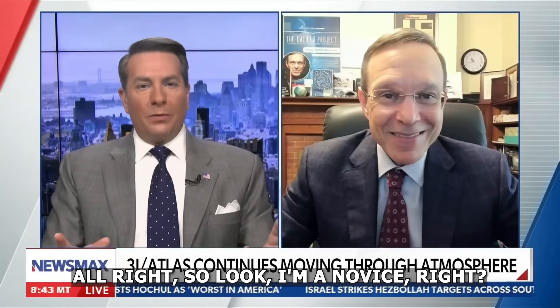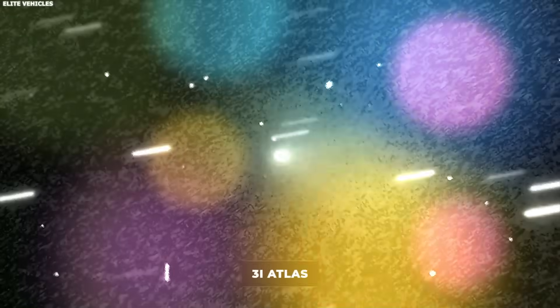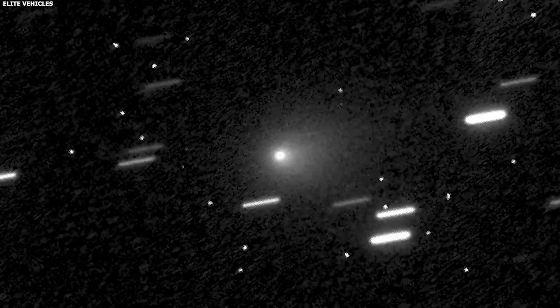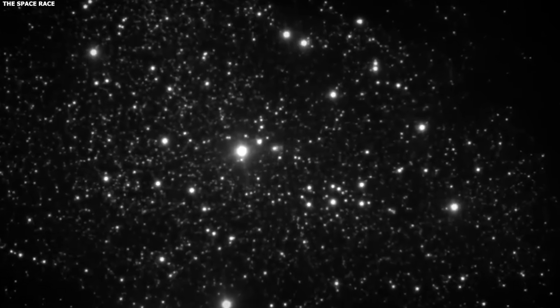All right, so look, I'm a novice, right? But as you said, it got close to the sun, it changed colors because it got hotter. Wouldn't that be natural though? 3I Atlas is getting closer to Earth. On December 19th, it'll reach its closest point to us.